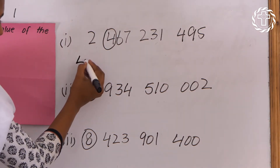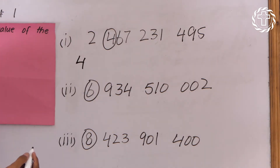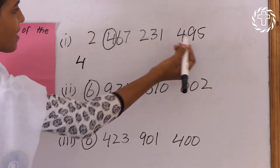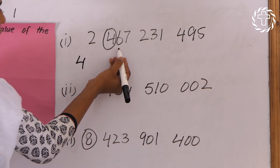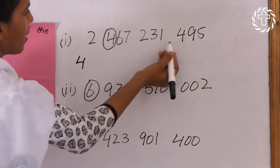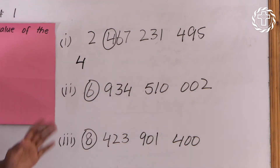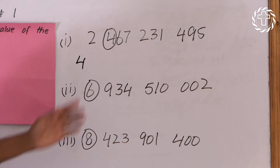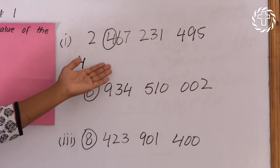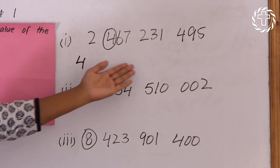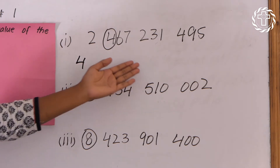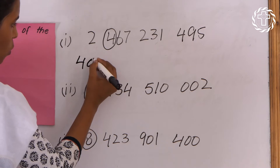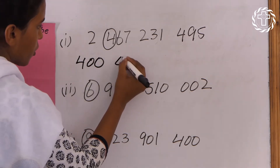We have one, two, three, four, five, six, seven, eight — we have eight digits on the right side of the ringed digit. So we will put eight zeros in the place of these digits: one, two, three, four, five, six, seven, eight.